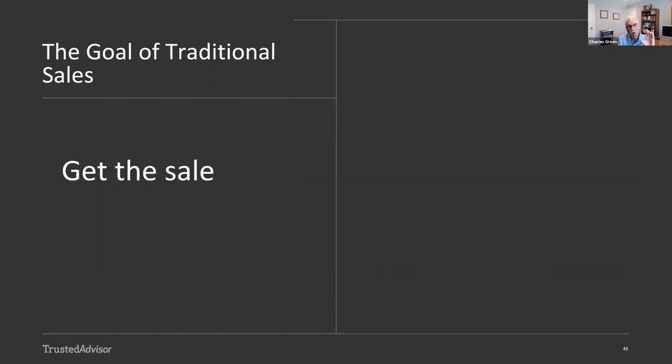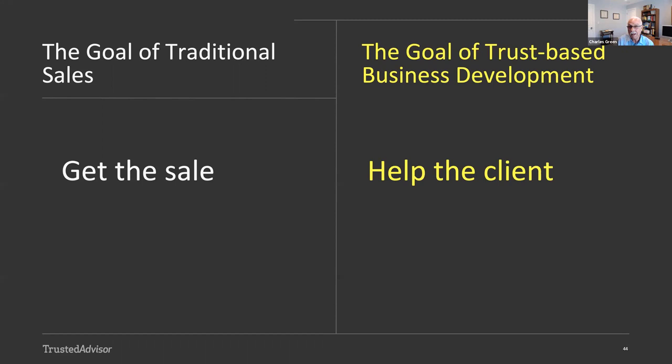And it starts right at the goal level. The goal of traditional sales, that linear deductive process is to get the sale. Pick up an ebook on sales and that's what they'll try and get you better at: getting the sale. That's where it goes wrong, right at the beginning, because the goal of trust-based business development is not to get the sale. It is to help the client. That's a profoundly different goal. And from that perspective, by the way, helping the client, that means that the sale is simply a by-product. It's not the goal.